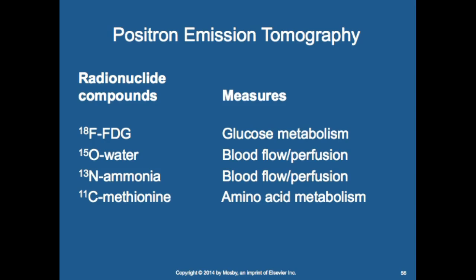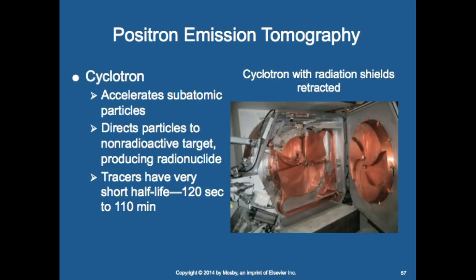A cyclotron accelerates subatomic particles and directs them to a non-radioactive target, producing radionuclide tracers. These tracers have very short half-lives — 120 seconds to 110 minutes — so they are very high dose in a short period. When you inject a patient, you have to be ready to scan quickly because timing is critical.